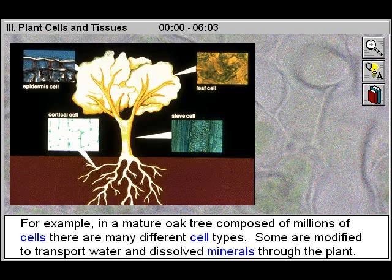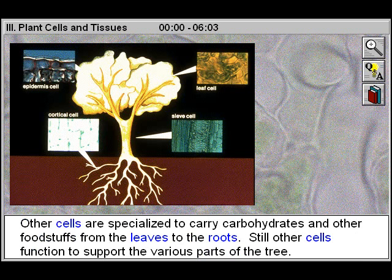For example, in a mature oak tree composed of millions of cells, there are many different cell types. Some are modified to transport water and dissolved minerals through the plant. Other cells are specialized to carry carbohydrates and other foodstuffs from the leaves to the roots. Still other cells function to support the various parts of the tree.